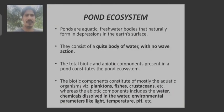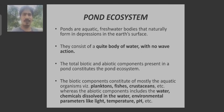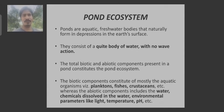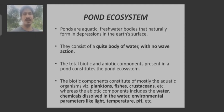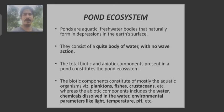Next is your pond ecosystem. Ponds are basically aquatic freshwater bodies found naturally in depressions of the earth's surface, or sometimes made artificially. They consist of a quiet body with no wave action — unlike rivers and oceans where you can see waves generating. The total biotic and abiotic components present in the pond constitute the pond ecosystem.